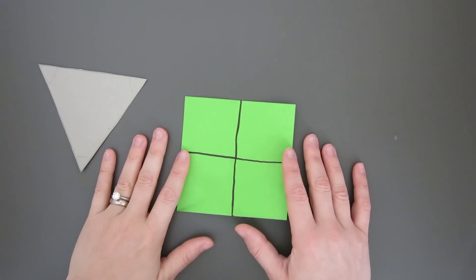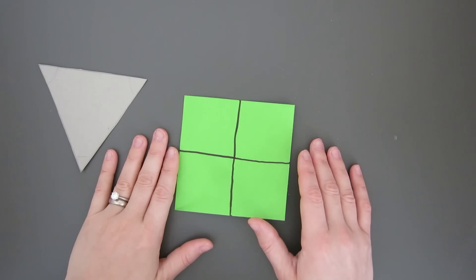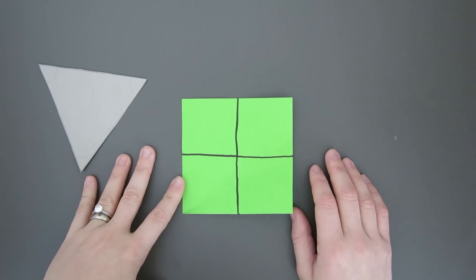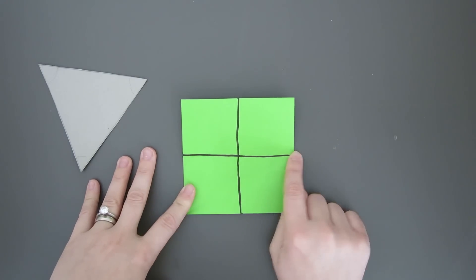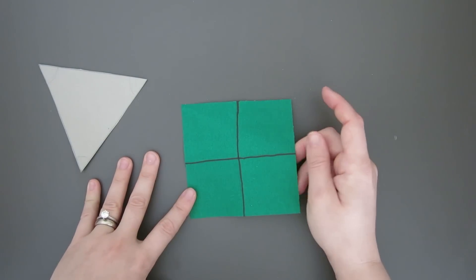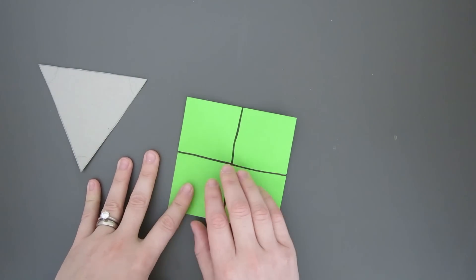These are going to become guide marks for the next part of the fold which will end up creating the equilateral triangle. I've drawn them in with sharpie markers so that you can see the guide marks. You don't need to draw them in when it's in front of you because you'll be able to see the crease.